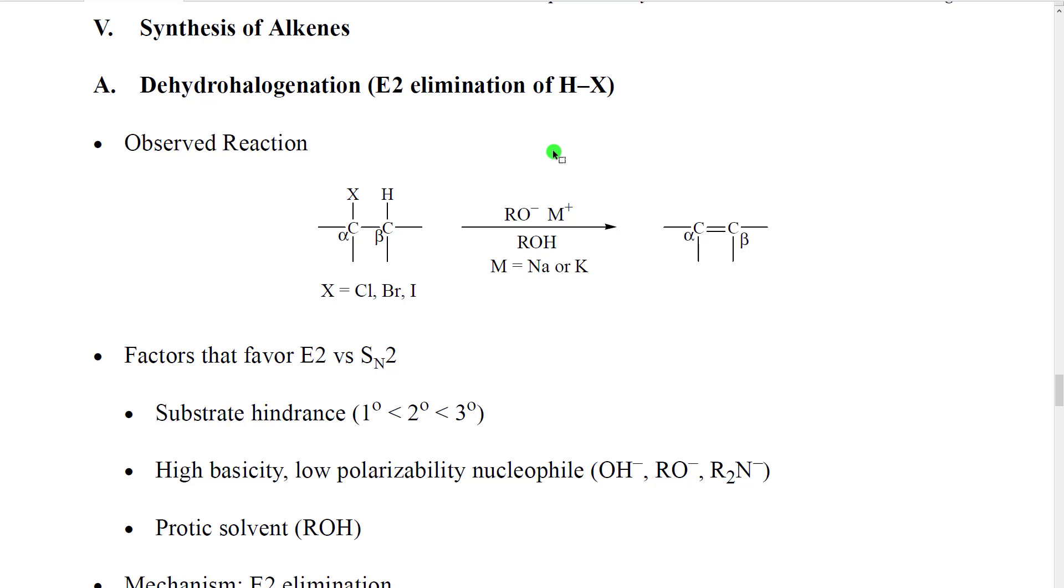The first one is actually just a review reaction from our previous section of material. It's an E2 elimination reaction which we discussed in section nine, where we have a halogen leaving group. In the modern organic naming of reactions, they tried to move away from the old fashion system where reactions were just named after the people who discovered them.